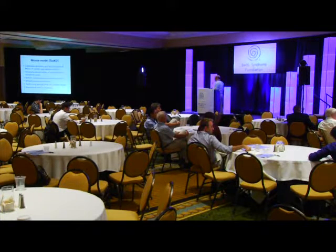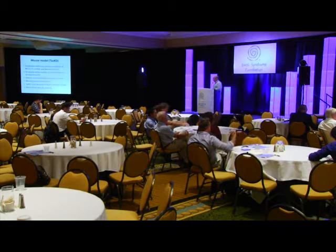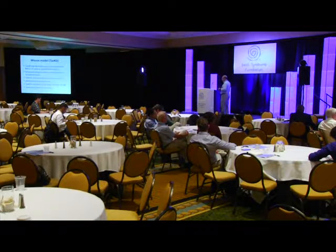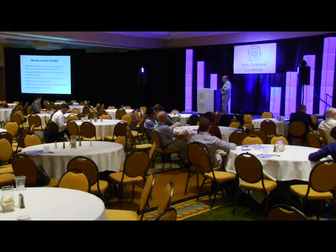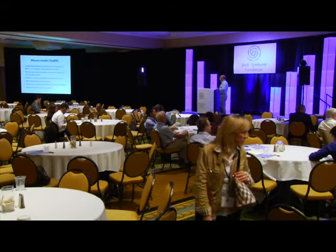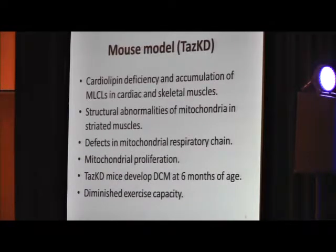Mouse model was created several years ago. It's called tafazine knockdown because it's knockdown, not knockout, achieved by shRNA-mediated RNA-interfering mechanisms. It requires doxycycline to induce this knockdown. This mouse model shares many features of human conditions, like cardiolipin deficiency, accumulation of monolysocardiolipins in cardiac and skeletal muscle, structural abnormalities of mitochondria, defects in mitochondrial respiratory chain, and mitochondrial proliferation. Tafazine knockdown mice develop dilated cardiomyopathy by six months of age, which is different from human conditions. Humans often have cardiac manifestations early in life and diminished exercise capacity.